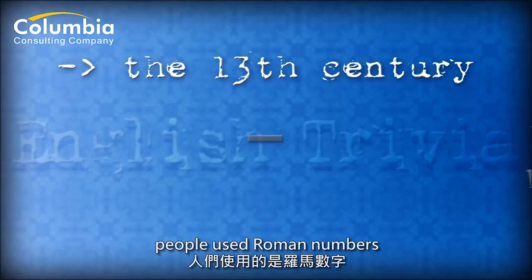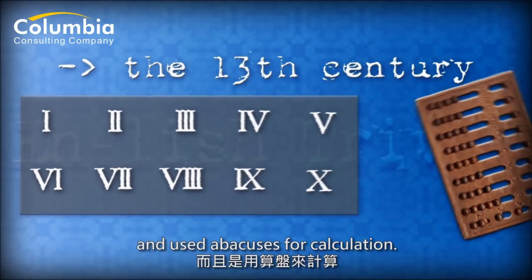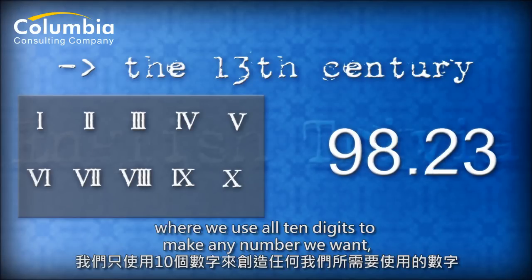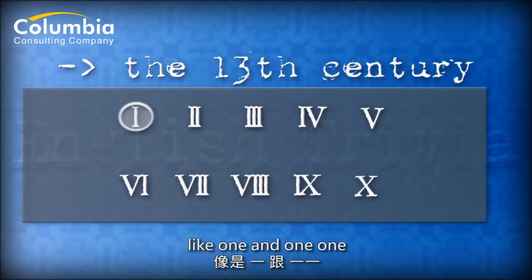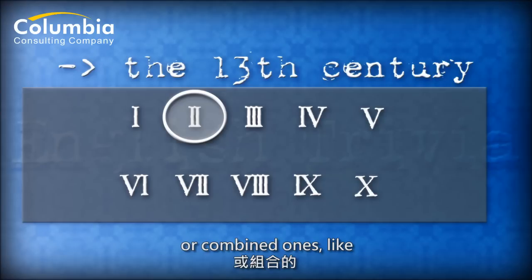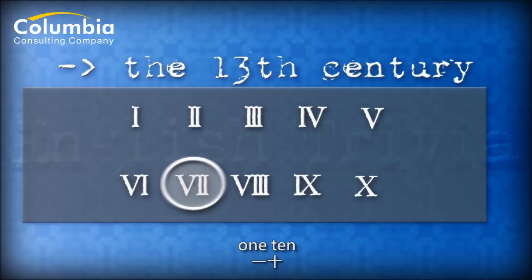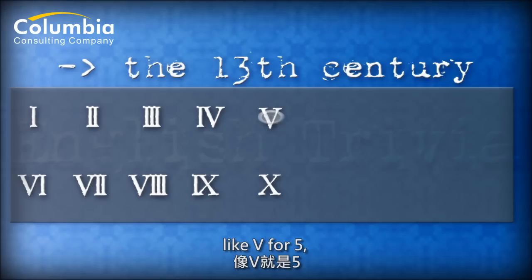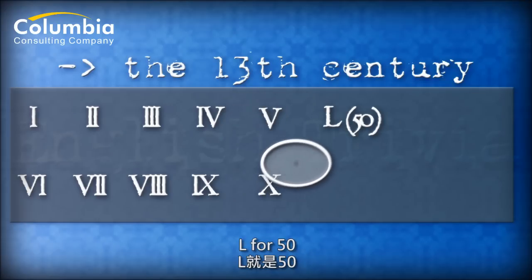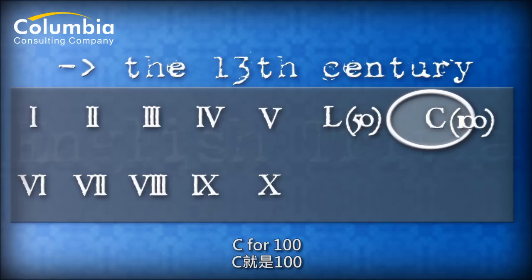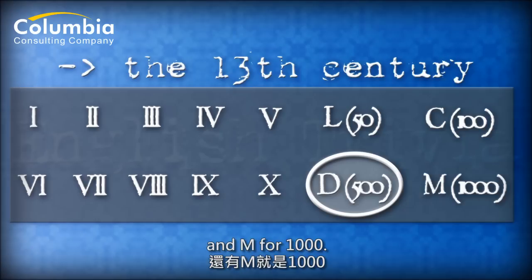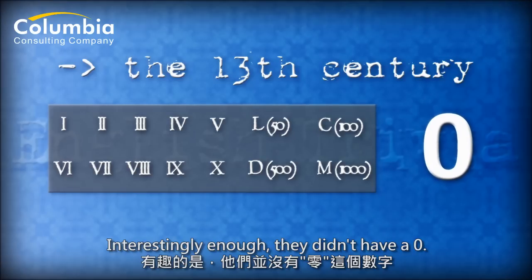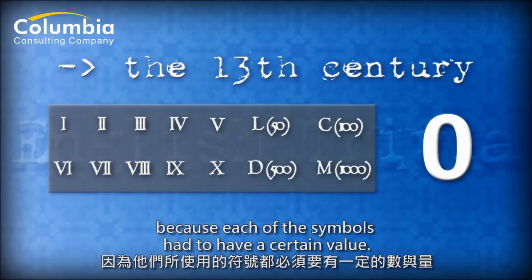Until the 13th century, people used Roman numbers and abacuses for calculation. Unlike the system we use now, where we use all ten digits to make any number we want, Romans repeated symbols like I and II, or combined them like IV and VI. For larger numbers, they created new symbols: V for 5, X for 10, L for 50, C for 100, D for 500, and M for 1000. Interestingly, they didn't have a zero — they didn't need it because each symbol had a certain value.